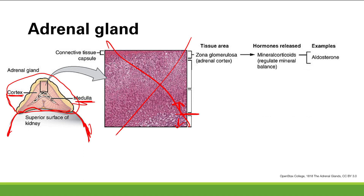The first and very outermost layer is the zona glomerulosa of the adrenal cortex. The zona glomerulosa is responsible for making mineralocorticoids, which regulate mineral and electrolyte balance, like potassium. An example of a mineralocorticoid is aldosterone. Remember, it was angiotensin II that stimulates aldosterone release from the adrenal gland.